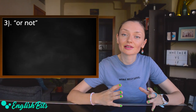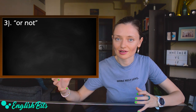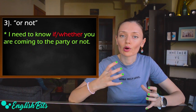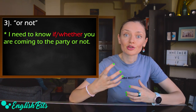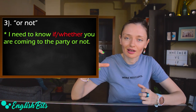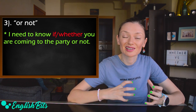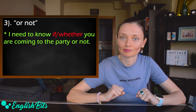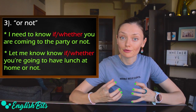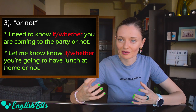The third case is in expressions with 'or not'. For example: 'I need to know if or whether you're coming to the party or not.' This 'or not' at the end of the sentence is used to add emphasis. And one more example: 'Let me know if or whether you're going to have lunch at home or not.'